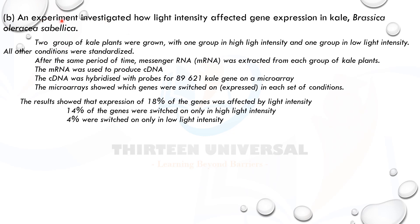An experiment investigated how light intensity affects gene expression in Kale plants. Two groups of plants were grown: one in high light intensity and one in low light intensity. All other conditions were standardized. mRNA was extracted from each group and used to produce cDNA. The cDNA was hybridized with probes for 89,621 kale genes on a microarray, showing which genes were switched on. 18% of genes were affected by light intensity: 14% switched on only in high light, 4% only in low light.